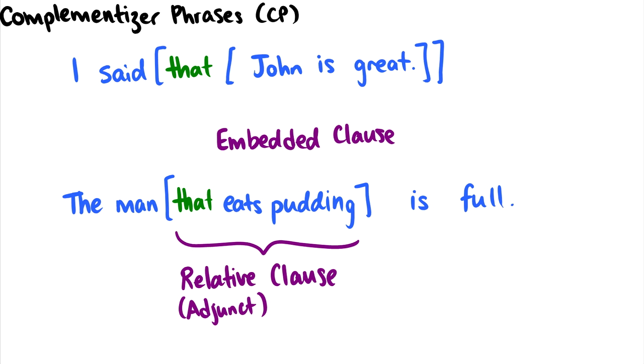For instance, in the first sentence, I said that John is great. So that John is great is a complementizer phrase headed by the complementizer that. This is not the same that that we see in determiners.